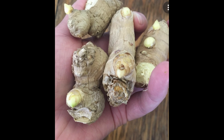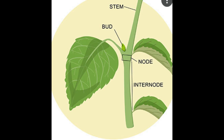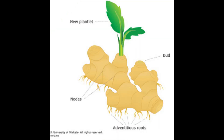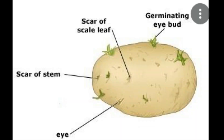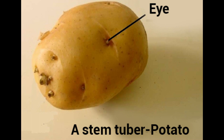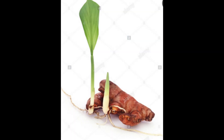You can see nodes in the ginger or turmeric. A node is a place where leaves and branches arise in a main stem, and nodes are also found in underground stems. Look at the picture — you can see the potato having nodes in its underground stem.